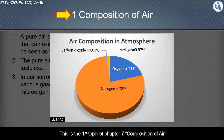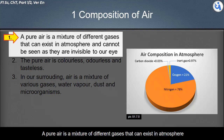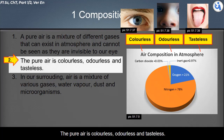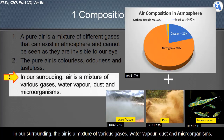This is the first topic of chapter 7: composition of air. Pure air is a mixture of different gases that exist in the atmosphere, and they cannot be seen as they are invisible to our eye. Pure air is colorless, odorless, and tasteless.